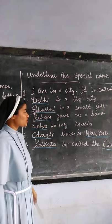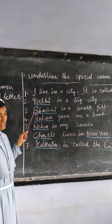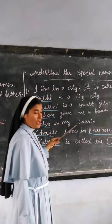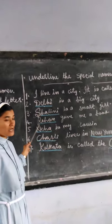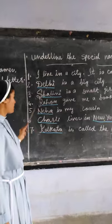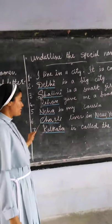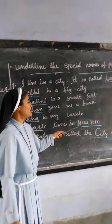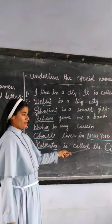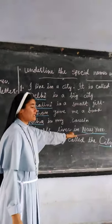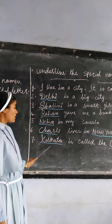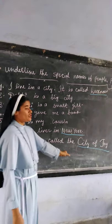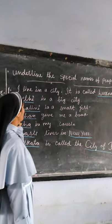Number 3: Shalini is a smart girl — Shalini starts with a capital letter, so it is a special name. Number 4: Rohan gave me a book — Rohan starts with a capital letter, so it is a special name. Number 5: Neha is a special name. Number 6: Charlie lives in New York — Charlie and New York are both special names. Number 7: Kolkata is called the city of joy — Kolkata is a special name, and city of joy is another special name.